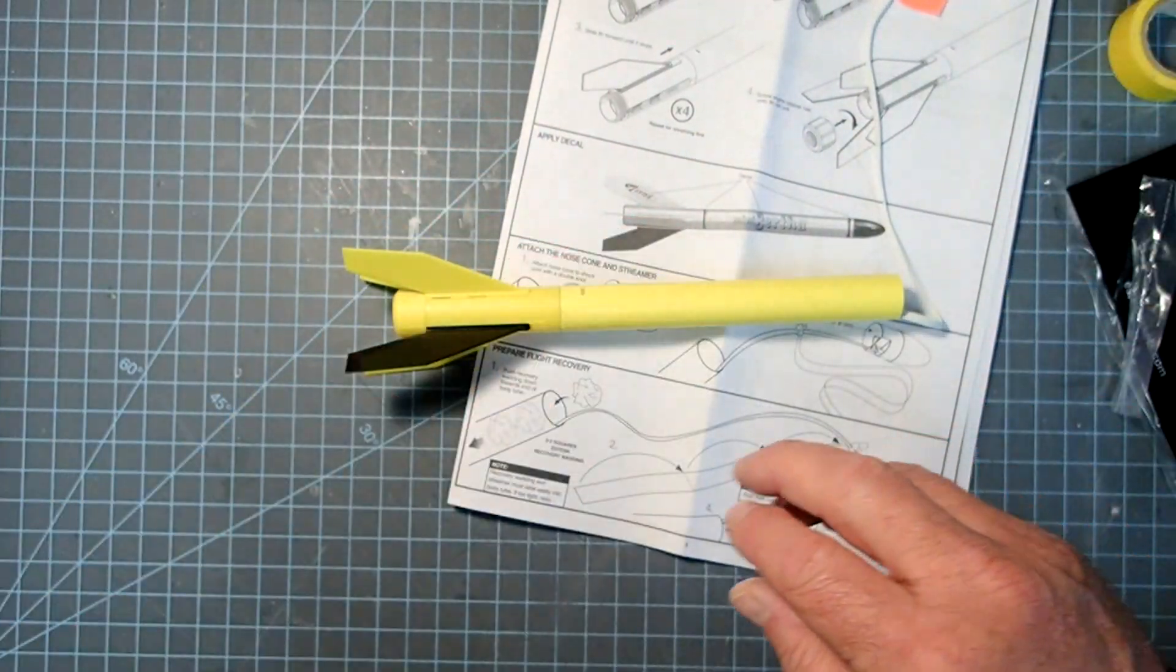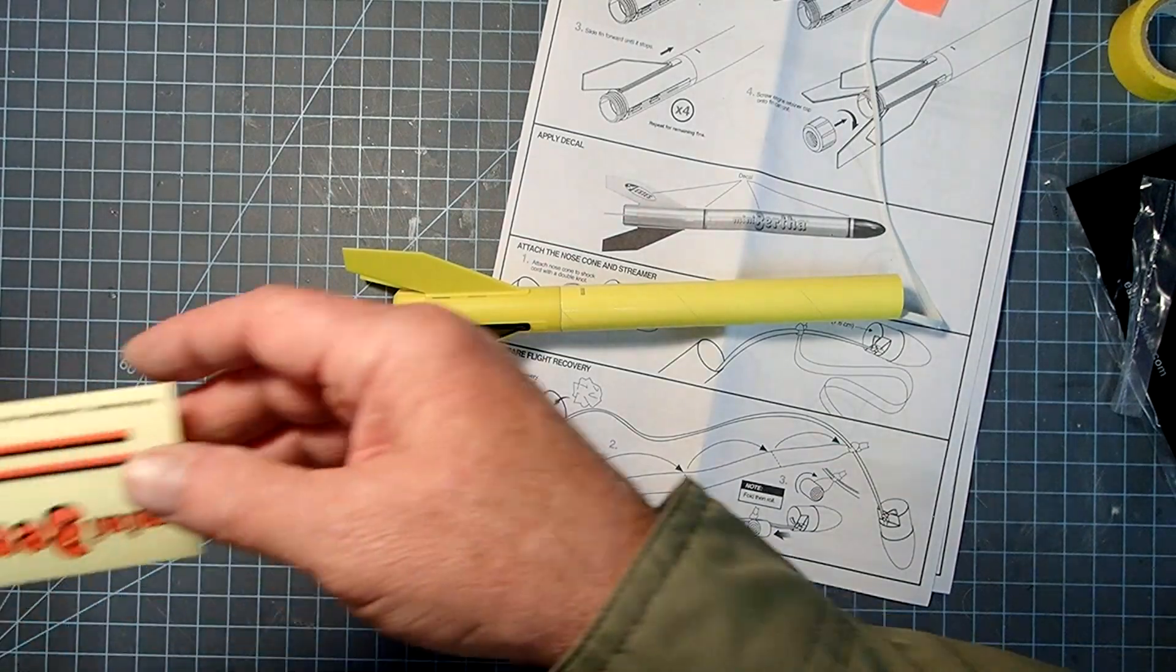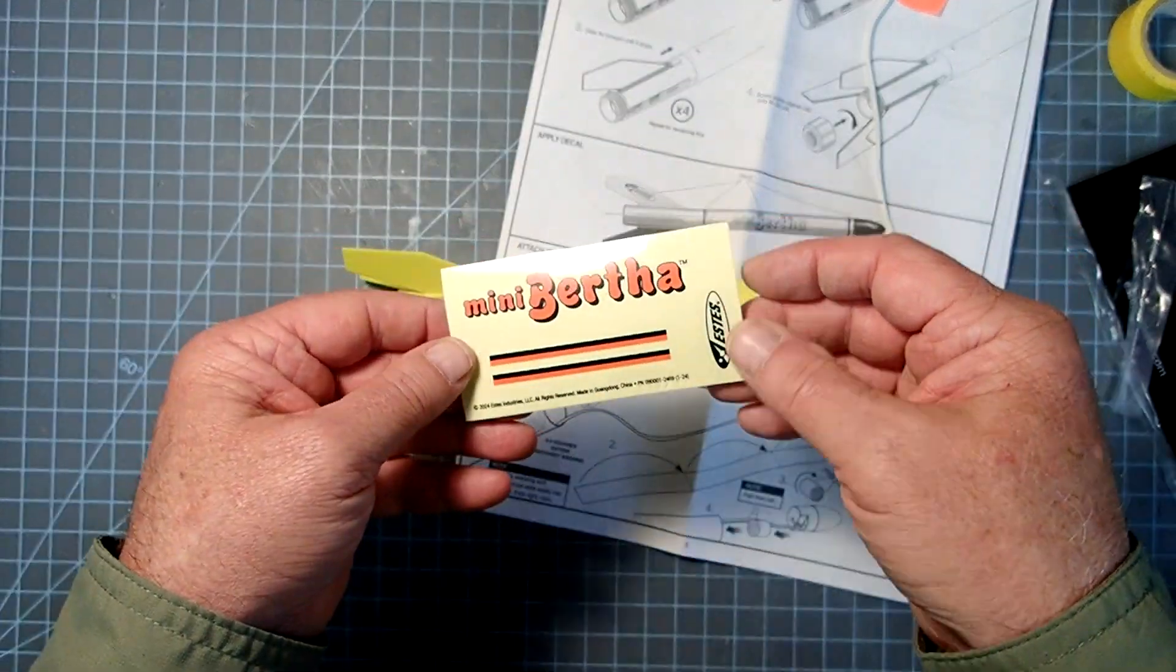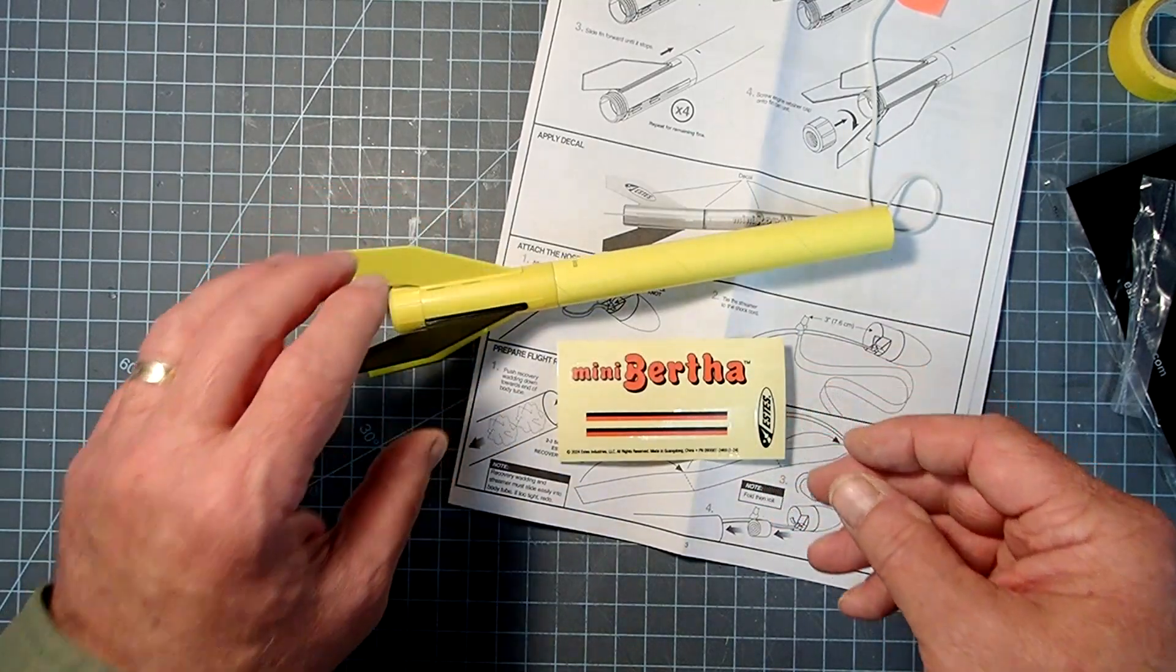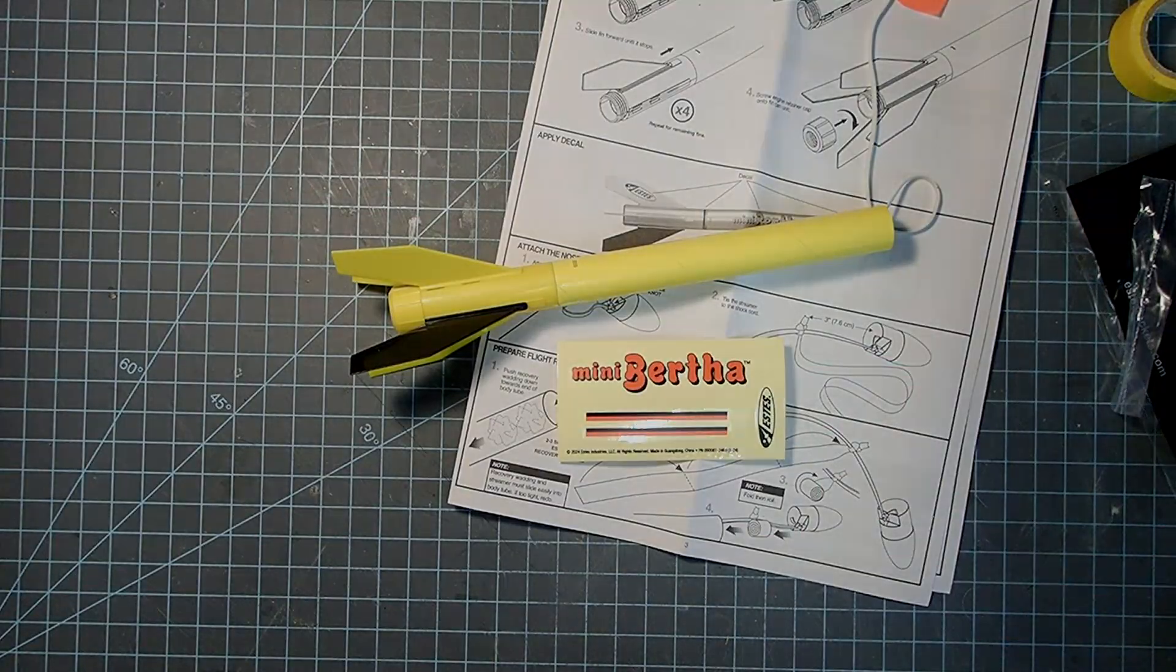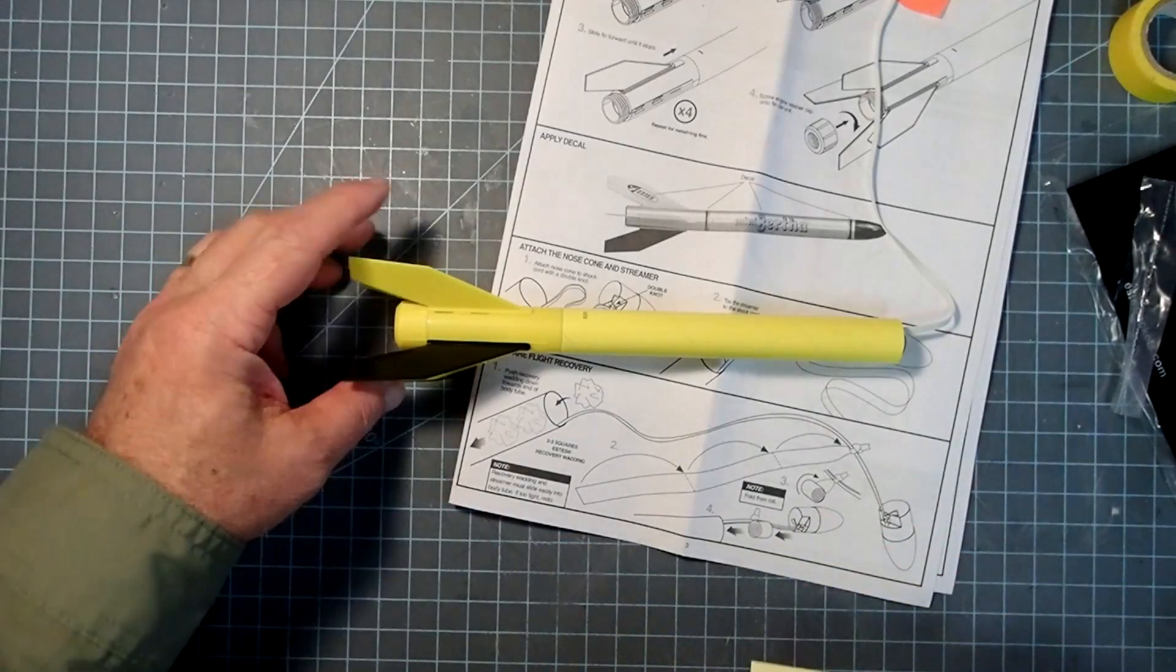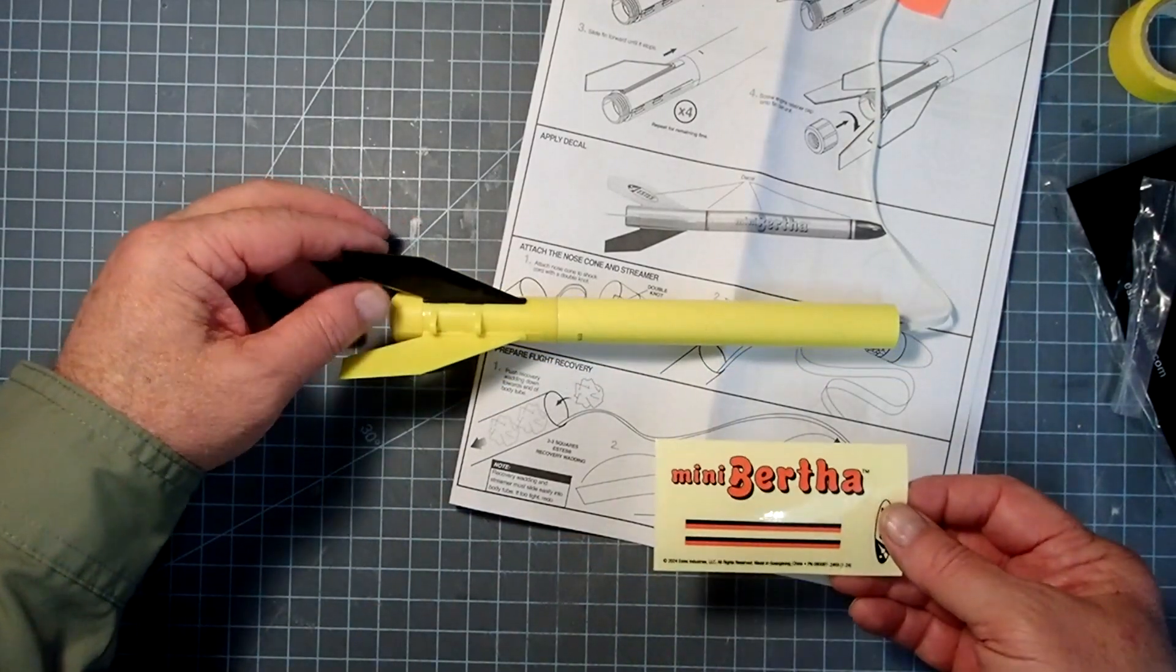And before we put this all together, we need some decals. There they are. They're hiding in the other part here. These are self-adhesive. So before I do anything else, I'm going to go wash my hands to get the oil and fingerprints and stuff minimized. Now I have relatively clean hands. And so we'll just put these decals on.